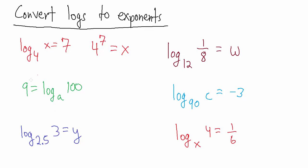Over here we have the sides of the equal sign swapped, but it doesn't matter — it doesn't change anything. We have 9 equals the base a logarithm of 100. So a is the base, and 9 equals the base a log of 100, meaning 9 is the exponent. And then all that's left is 100, so: a to the 9th equals 100.